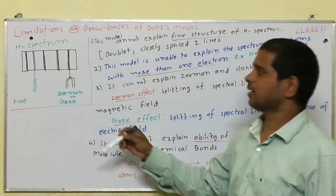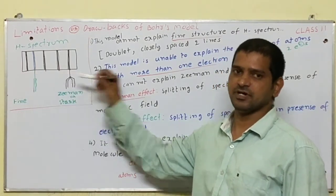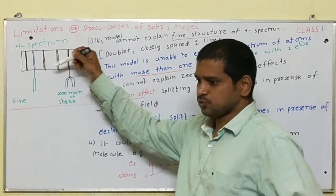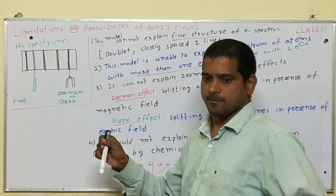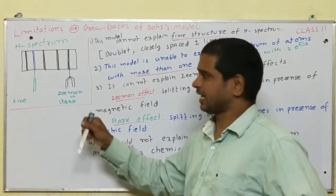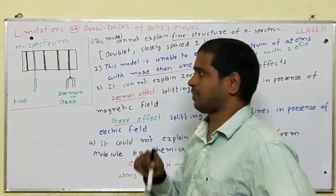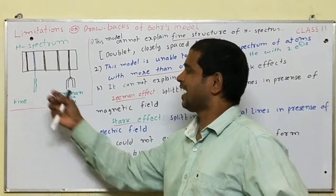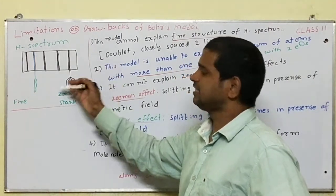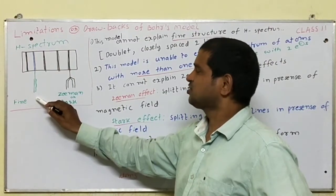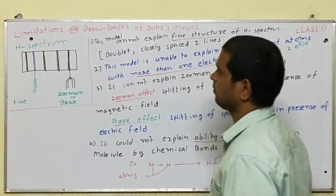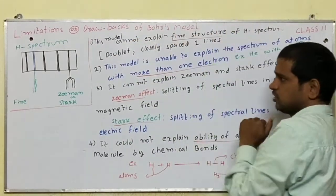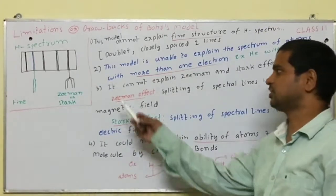We know hydrogen spectrum consists of 5 series of lines. If we observe this spectrum through sophisticated spectroscopic technique, each line in hydrogen spectrum splits into 2 closely placed lines known as doublet, and this structure is known as fine structure of hydrogen spectrum. Bohr model cannot explain fine structure of hydrogen spectrum.